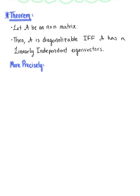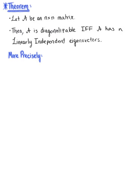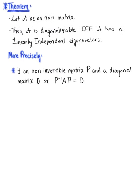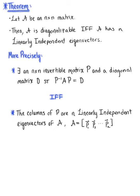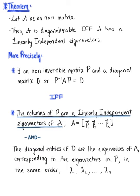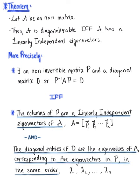More precisely, we can say that there exists an n by n invertible matrix P and a diagonal matrix D, such that the inverse of P times A times P equals matrix D, if and only if the columns of matrix P are n linearly independent eigenvectors of A, and the diagonal entries of matrix D are the eigenvalues of A corresponding to these eigenvectors in P in the same order.